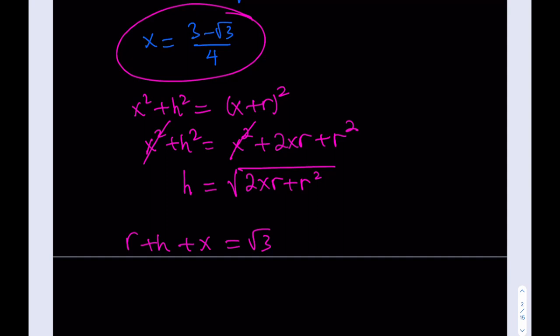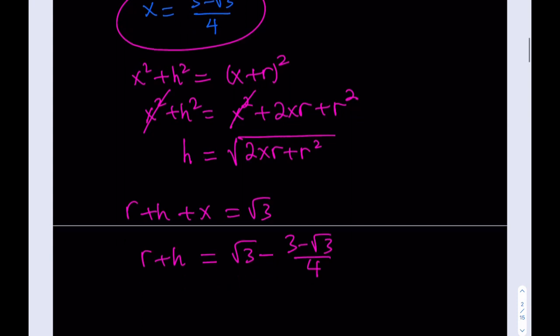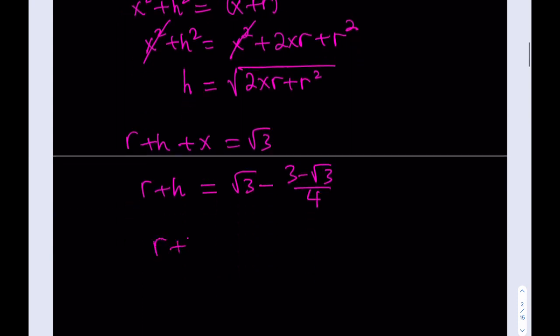From that second equation, if I isolate R + H, I get √3 − X. And X is given as (3 − √3)/4. Simplifying: R + H = (4√3 − 3 + √3)/4 = (5√3 − 3)/4.